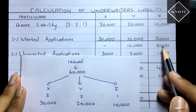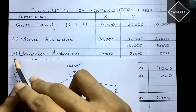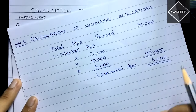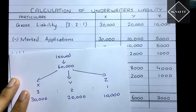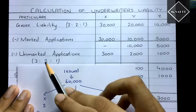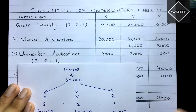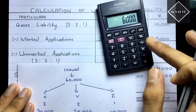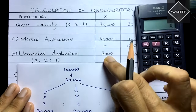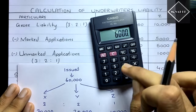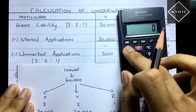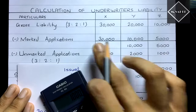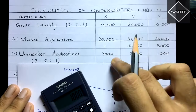Now subtract the unmarked applications. The 6,000 unmarked applications are distributed in the gross liability ratio of 3:2:1. So X gets 6,000 × 3/6 = 3,000; Y gets 6,000 × 2/6 = 2,000; Z gets 6,000 × 1/6 = 1,000. Subtracting: X = 0 − 3,000 = −3,000 (surplus); Y = 10,000 − 2,000 = 8,000; Z = 5,000 − 1,000 = 4,000.